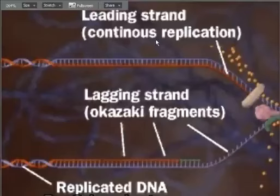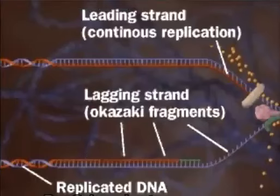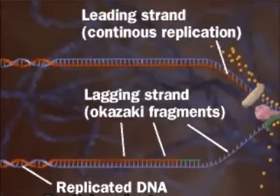Once we have two double-stranded complementary pieces of DNA, we can reorientate them into a helix structure, and we have now replicated our DNA completely. I hope that helps you to understand — please refer to this video as often as you need to and ask any questions. Practice makes perfect, so get in there and practice drawing it a few times.